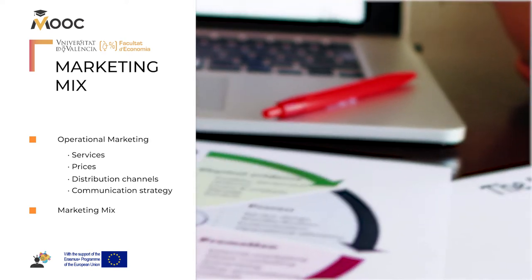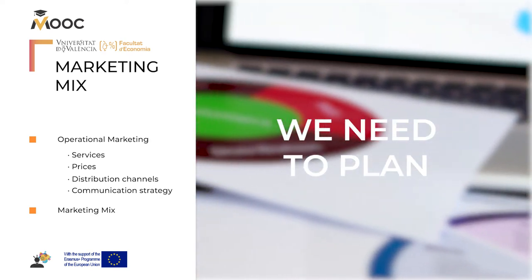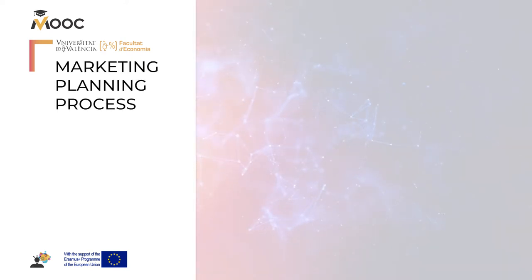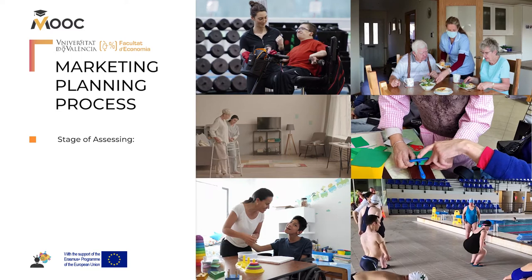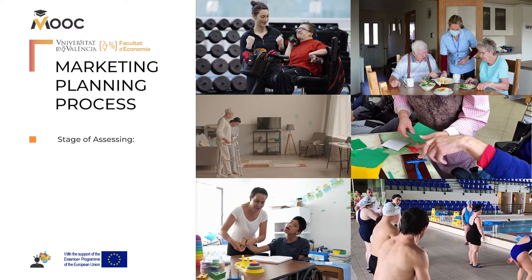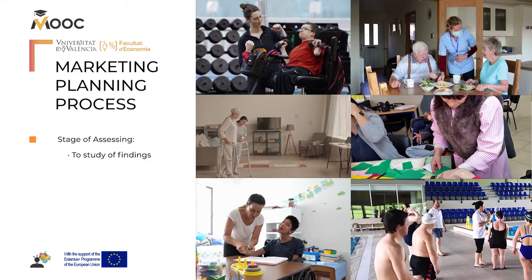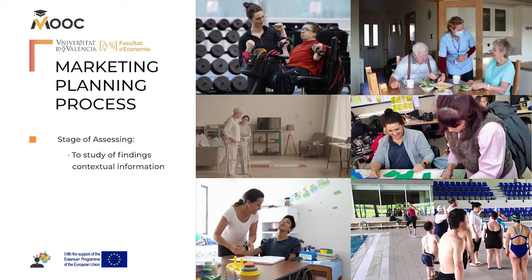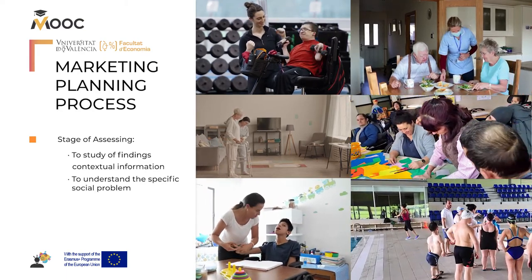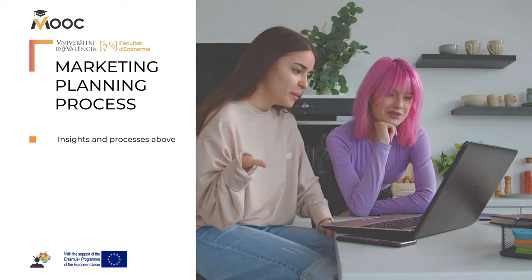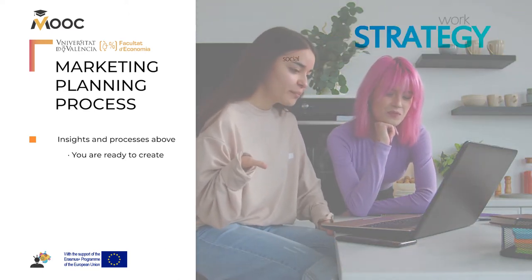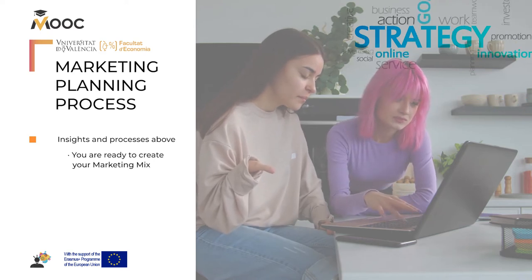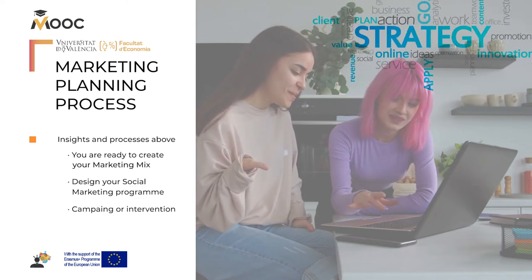So, to apply social marketing, we need to plan. There are four main steps in the social marketing planning process: assess, design, do, and learn. The first stage of assessing involves a systematic data collection and the study of findings and other contextual information to understand the specific social problem to be addressed. Based on the insights and processes above, you are ready to create your marketing mix and to design your social marketing program, campaign, or intervention.